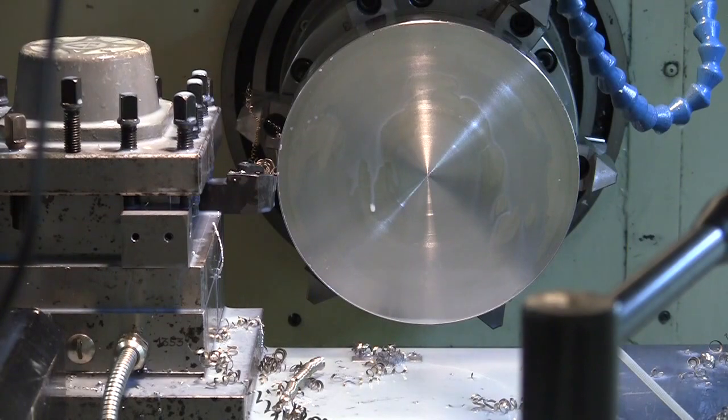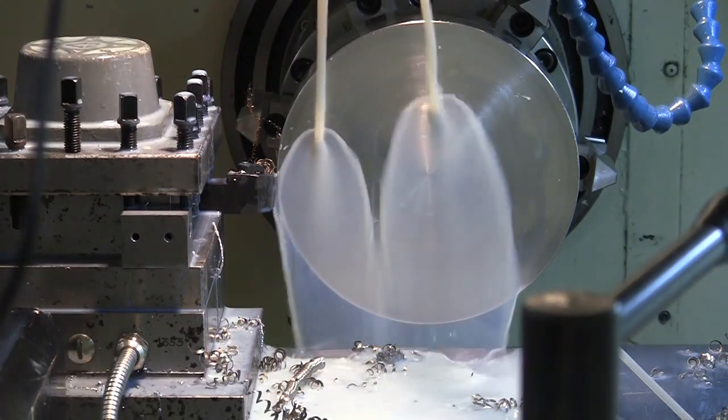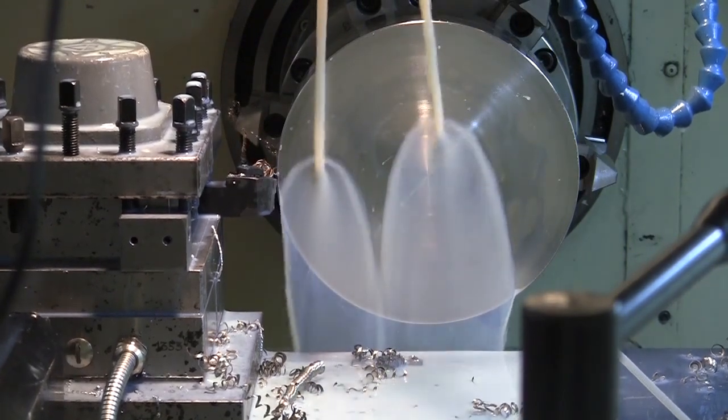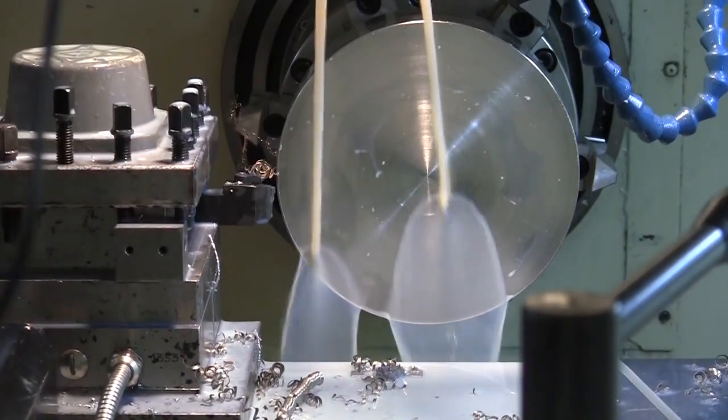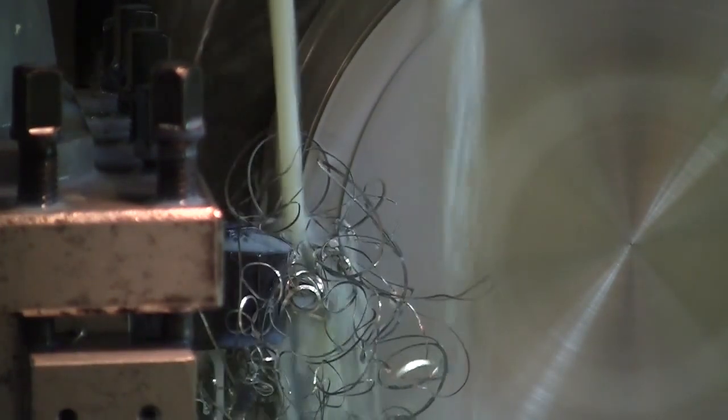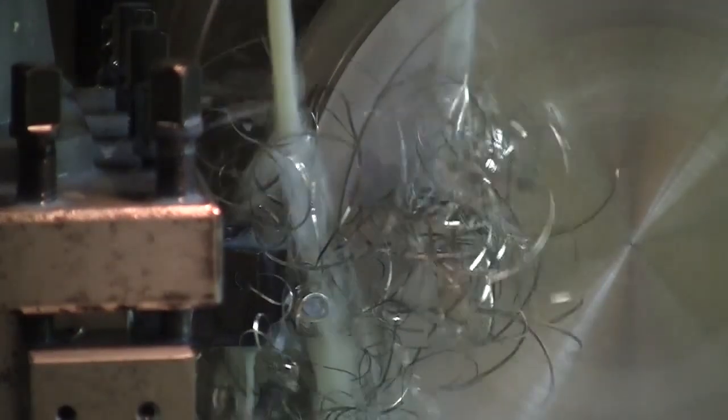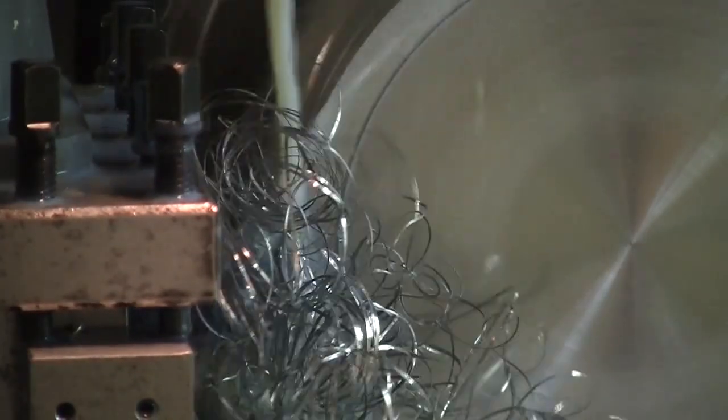You could hear that edge snap, and you could also hear me snap in the background—I had to bleep that out. But anyhow, we got through it and now I'm trying that Hertel insert. I can tell you that thing did not perform. It just created a bunch of streaming chips, and probably no fault of its own. I was not taking a heavy depth of cut or heavy enough feed, but still it definitely did not break the chips as well as the Kenna metal insert.